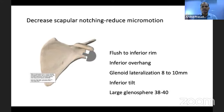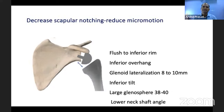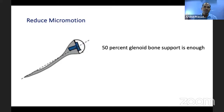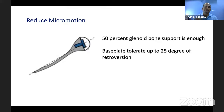A large glenosphere in the 38 to 40 mm range has a high survival rate. The neck-shaft angle, originally 155 degrees, is now preferably set at 135 degrees, which also helps prevent scapular notching. Regarding glenoid base plate coverage, up to 50 percent bone support is sufficient, and up to 25 degrees of retroversion is acceptable.